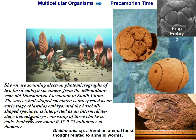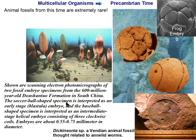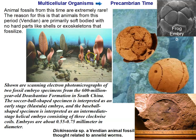Just before the Cambrian explosion, we're at the very end of pre-Cambrian time — the Vendian period. In the Vendian, we find the first fossils of multicellular animal life, but they're very rare because animals were soft-bodied and didn't have hard parts. We have found fossils of animals dating back as far as 600 million years, long before the Cambrian explosion when animals evolved hard parts.